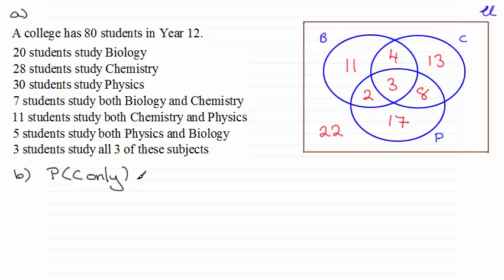And this is a very quick answer, so I'll give you the answer in just a few moments. For C only, that's this 13 here. It's not in the biology or physics section, so it's going to be 13 students out of 80.